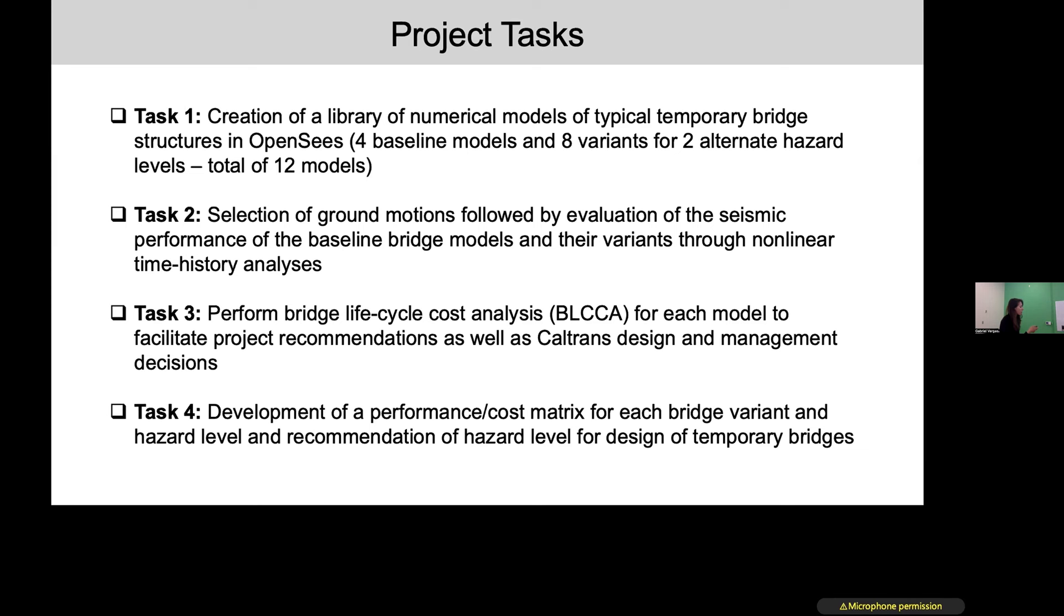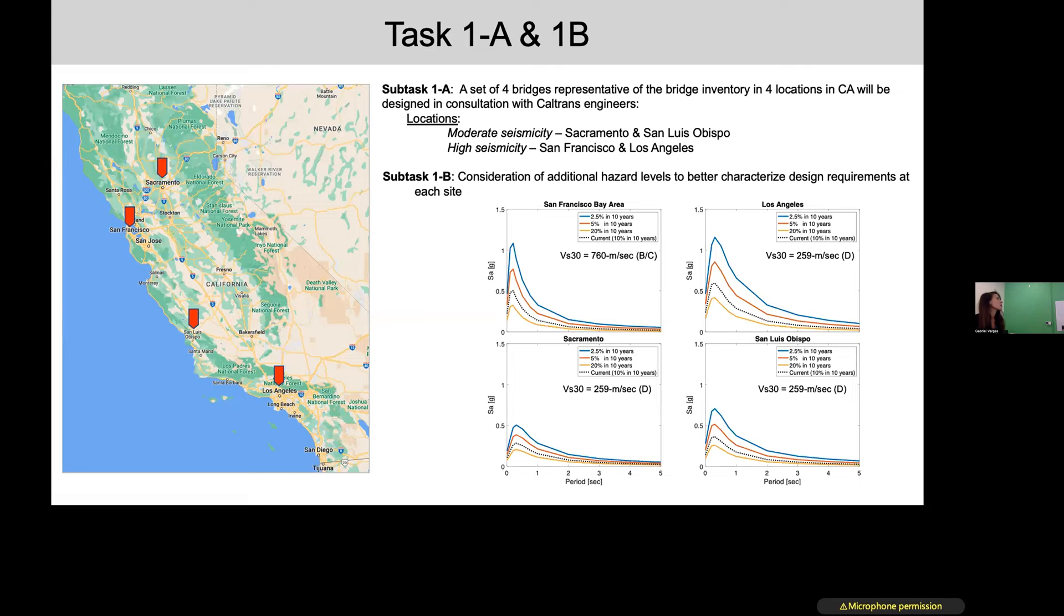Starting from Task one, subtask 1A and 1B. Together with the Caltrans team, we have selected these four locations for our study. We have two locations, Sacramento and San Luis Obispo, which are representative of moderate seismicity sites, and then two sites, San Francisco and Los Angeles, which are representative of high seismicity sites.